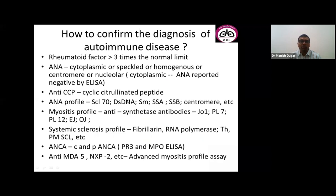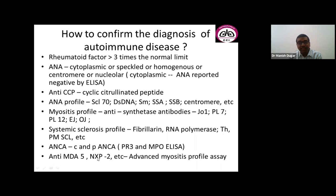Common tests include rheumatoid factor — significant if three times the normal limit — and anti-nuclear antibody by immunofluorescence, because myositis patients may have a cytoplasmic pattern on ANA that can be missed by ELISA. Also order anti-CCP, ANA profile covering multiple antibodies, myositis profile, systemic sclerosis profile, and ANCA testing. In microscopic polyangiitis, lung manifestations may occur. Newer antibodies — anti-MDA5 and NXP2 — are seen in dermatomyositis and may involve the lungs.